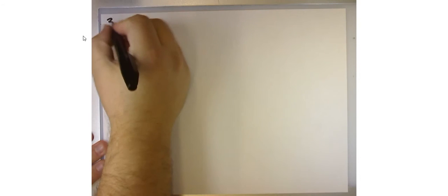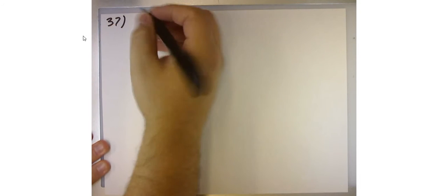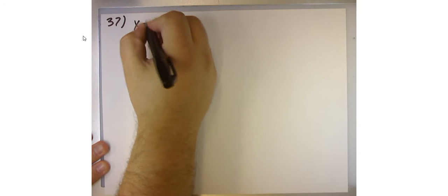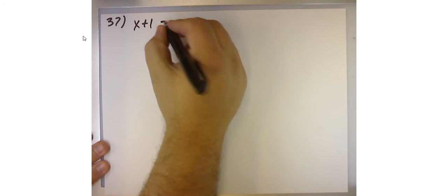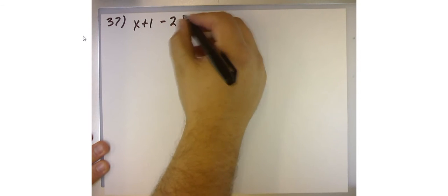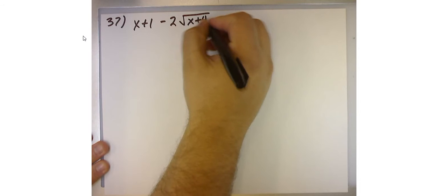For problem number 37, we're asked to solve x+1 - 2√(x+4) = 0.